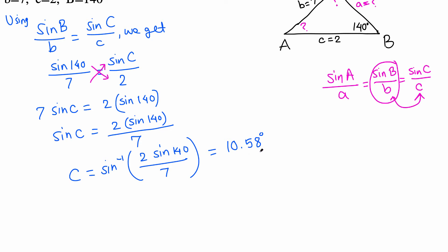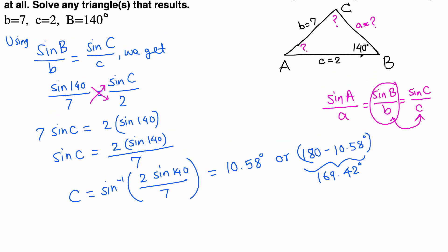C is 10.58, but when we take sine inverse and get one angle, there is a possibility of another angle as well. The second angle is always 180 minus whatever we got from the calculator: 180 minus 10.58, which is 169.42. Let's see if we're able to use both angles or just one angle. One angle is already 140, and we know the sum of three angles is 180. But if we write 169, then 169 plus 140 is way more than 180, so this angle is not possible.